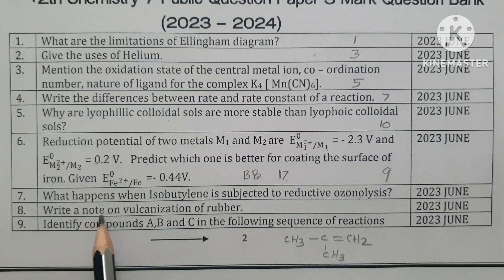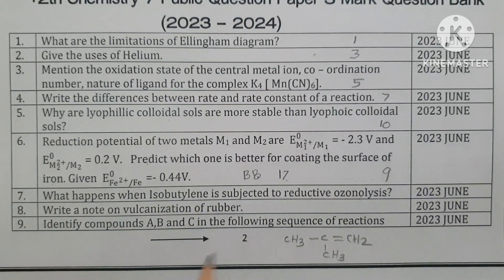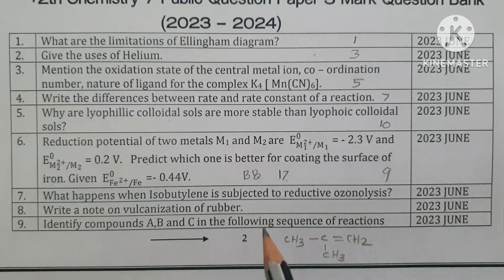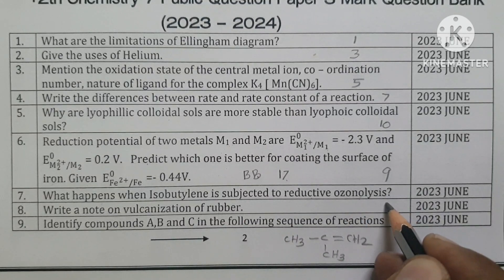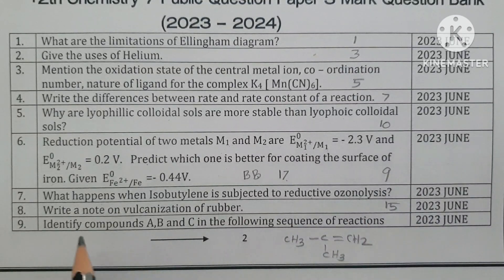Write a note on vulcanization of rubber — 15th lesson. Identify compounds A, B, and C in the following sequence of reactions.